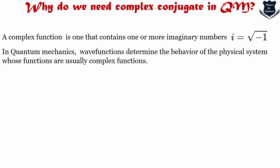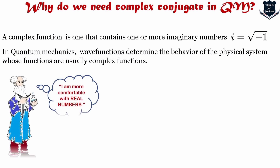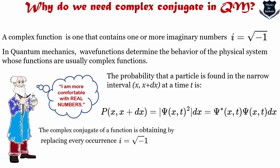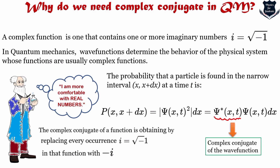Wave functions determine the probability of locating an electron or subatomic particle, and these are all complex functions. Because physicists are much more comfortable with real numbers, we want to eliminate the complex numbers by using the complex conjugate. The probability of finding a particle in a narrow interval between x and x + dx is given by the wave function and its complex conjugate.